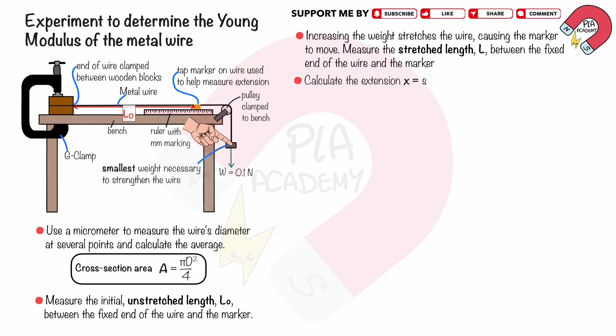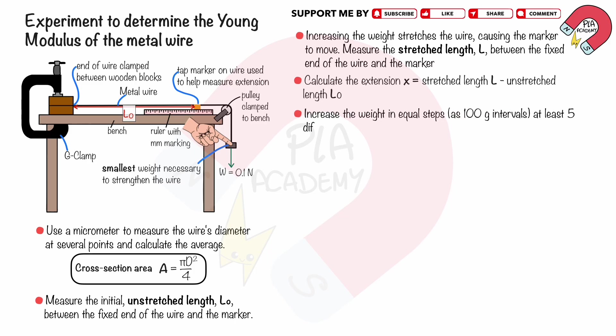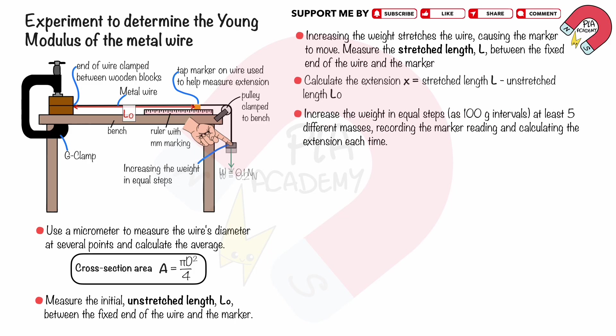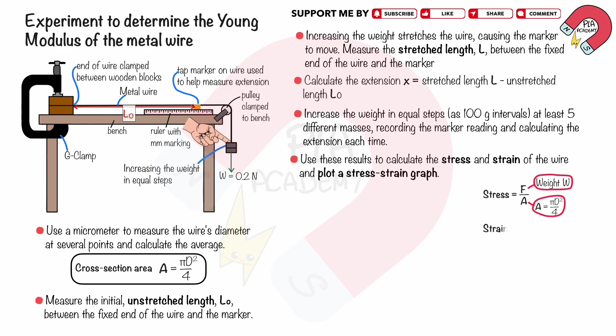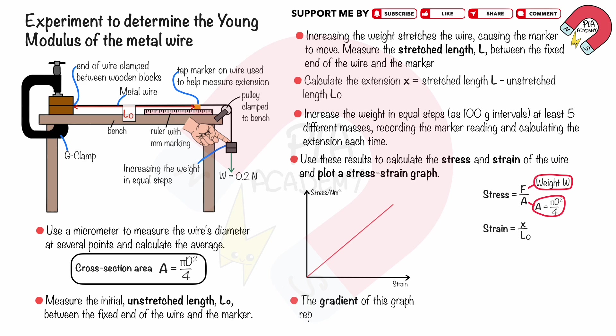Calculate the extension X as the difference between the stretched length L and the unstretched length L0. Increase the weight in equal steps, such as 100 g intervals, for at least 5 different masses, recording the marker reading and calculating the extension each time. Use these results to calculate the stress and strain of the wire and plot a stress-strain graph. The gradient of this graph represents the Young's modulus.